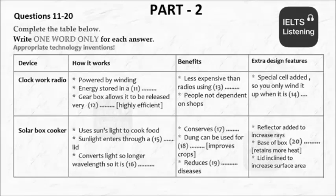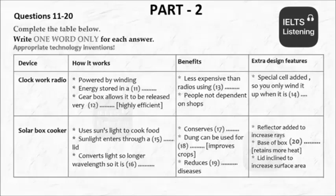And we'll also need to explain how the energy is stored — in a spring. Keep it simple. But we also need to say that the thing which makes the mechanism so special is the inclusion of a gearbox, which makes it possible to release energy extremely slowly. And that means that it can operate for a long time with minimal effort.